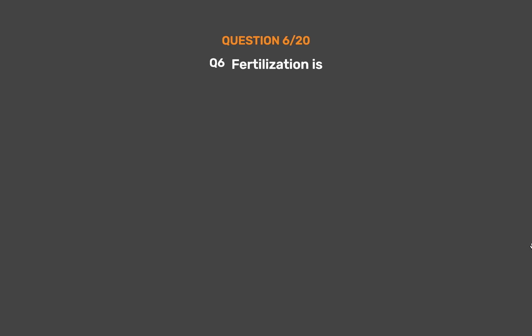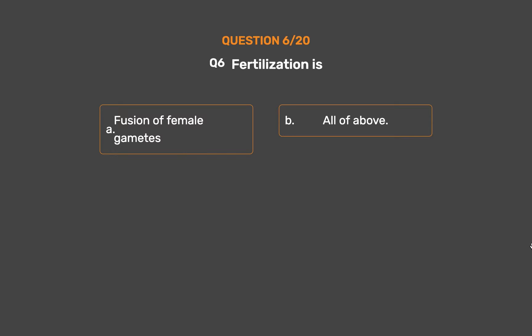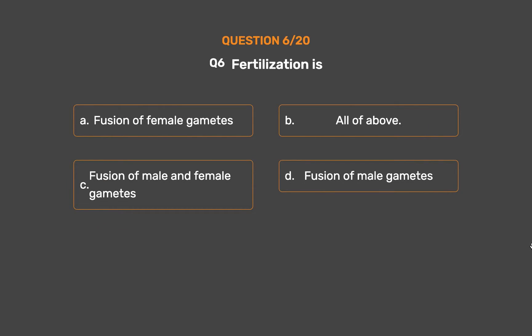Question No. 6. Fertilization is: Option A – Fusion of female gametes. Option B – All of the above. Option C – Fusion of male and female gametes. Option D – Fusion of male gametes.